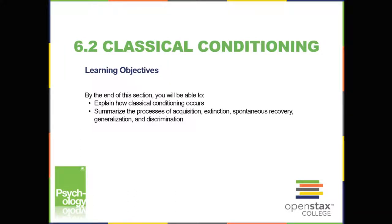6.2: Classical Conditioning. Learning Objectives: By the end of this section, you'll be able to explain how classical conditioning occurs and summarize the processes of acquisition, extinction, spontaneous recovery, generalization, and discrimination.